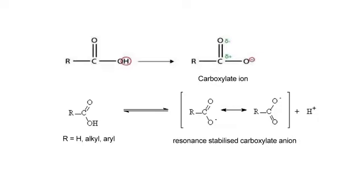When the acid ionizes in water, it donates its proton to the water. The conjugate base of the acid, that is the carboxylate ion, is a resonance hybrid of two equivalent resonating structures. Since the negative charge is spread, the resonance energy of the anion will be greater than that of the unionized carboxylic acid. The equilibrium constant of the acids will be greater than that of the alcohol. That is, the pKa values of the acids will be lower than those of the alcohols. Carboxylic acids are also more acidic than phenols.